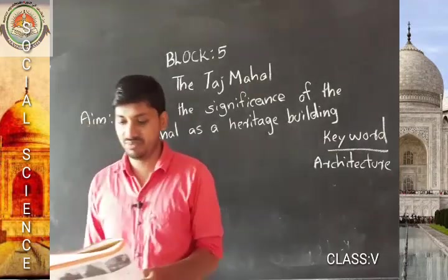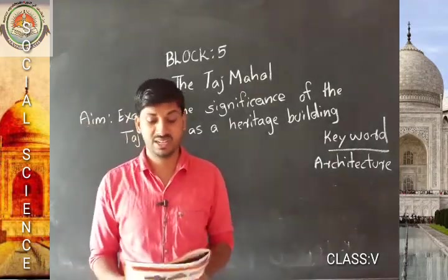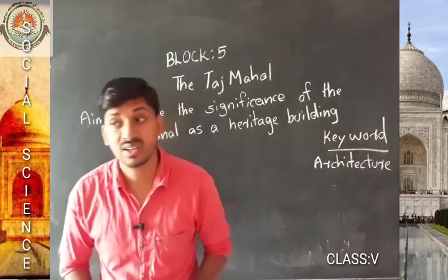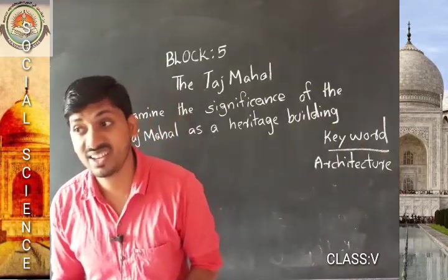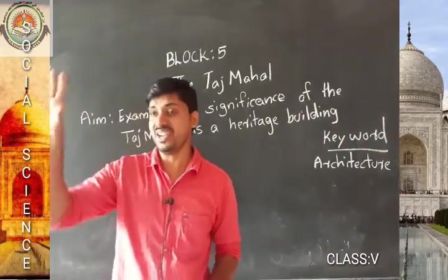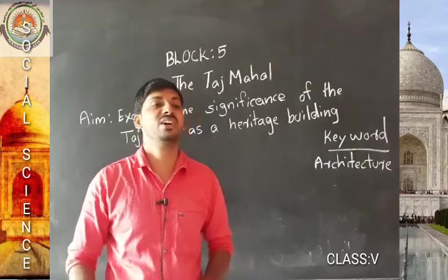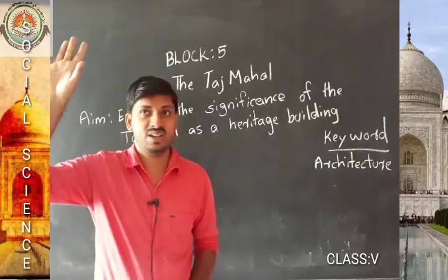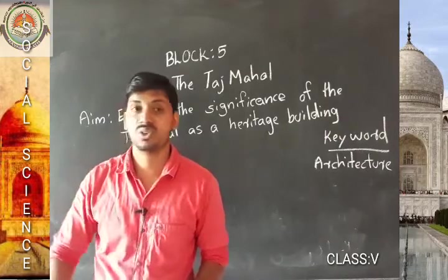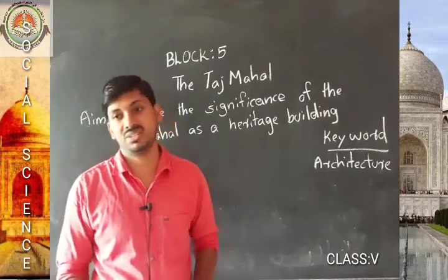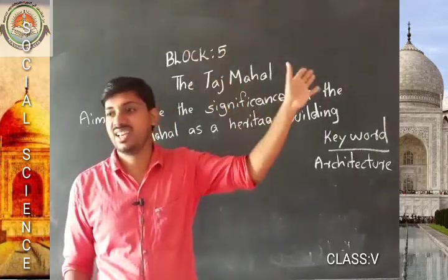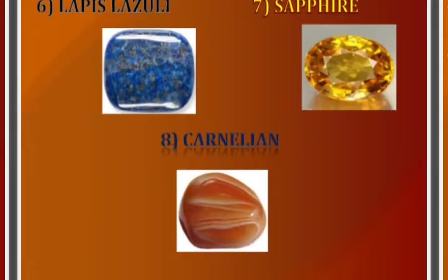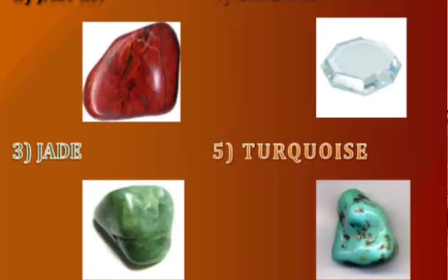These precious stones came from Punjab, China, Tibet, and Sri Lanka. There are 28 different types of precious stones placed on the walls of the Taj Mahal. These are some of the different types of stones that we can see in the Taj Mahal.